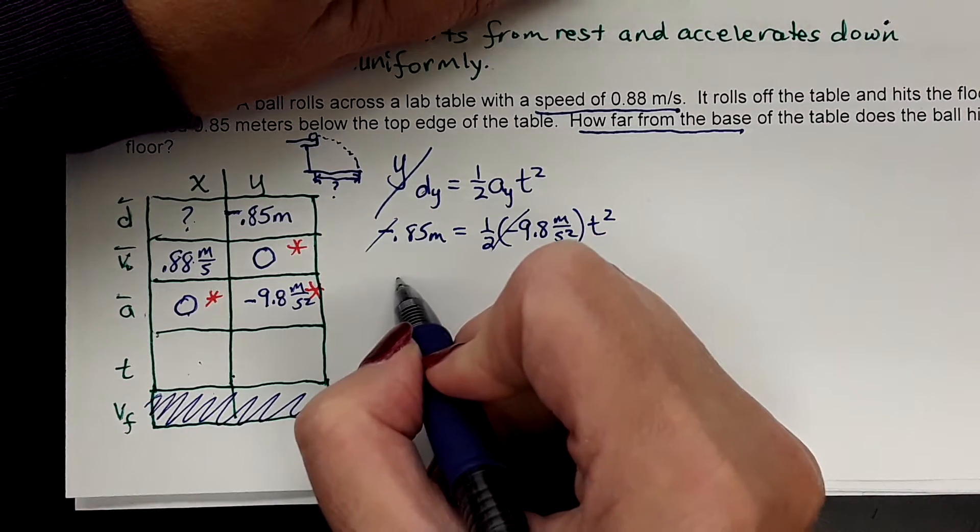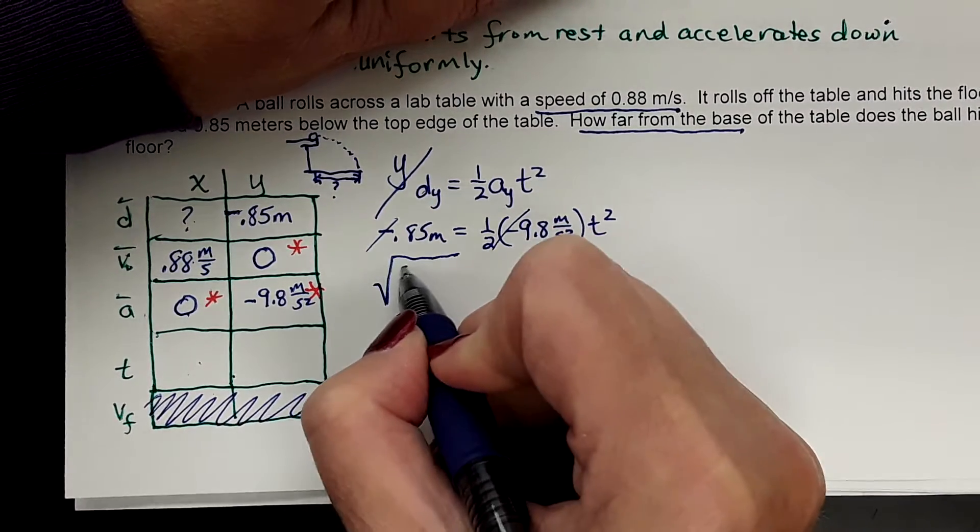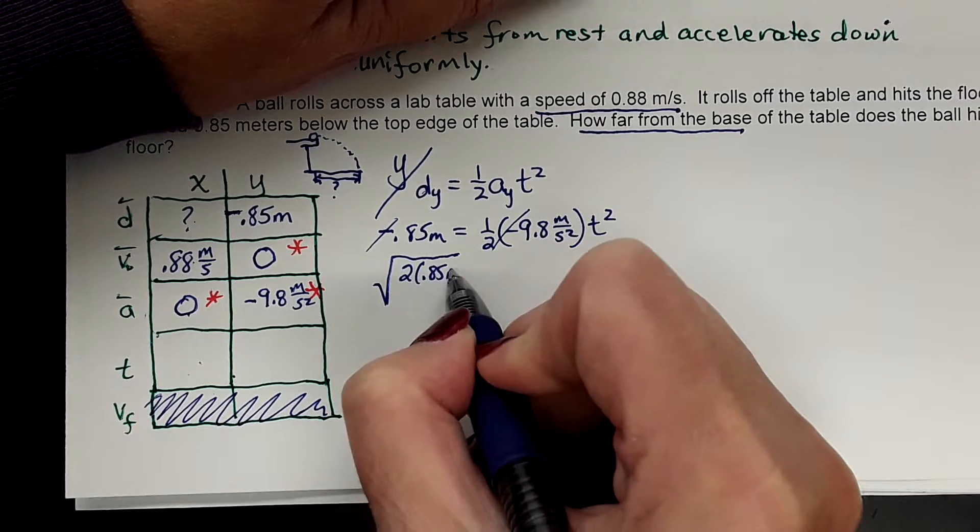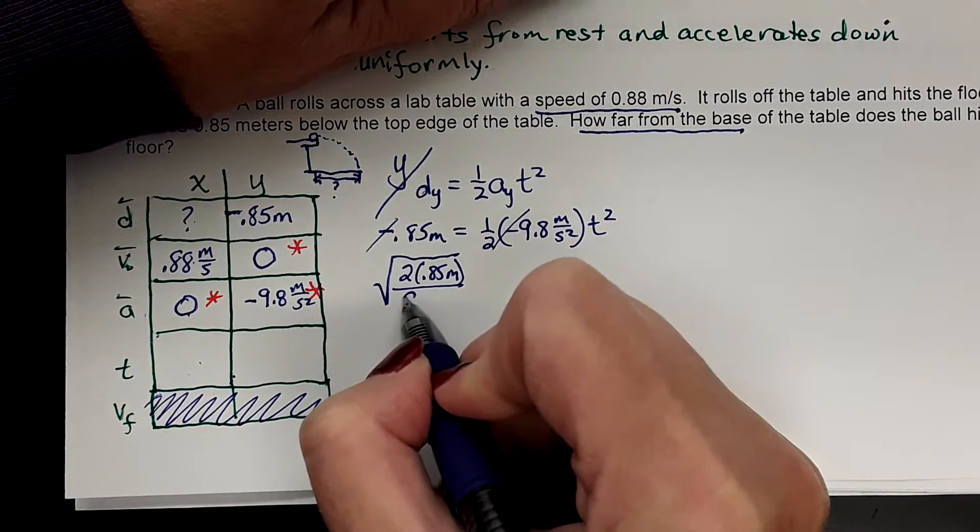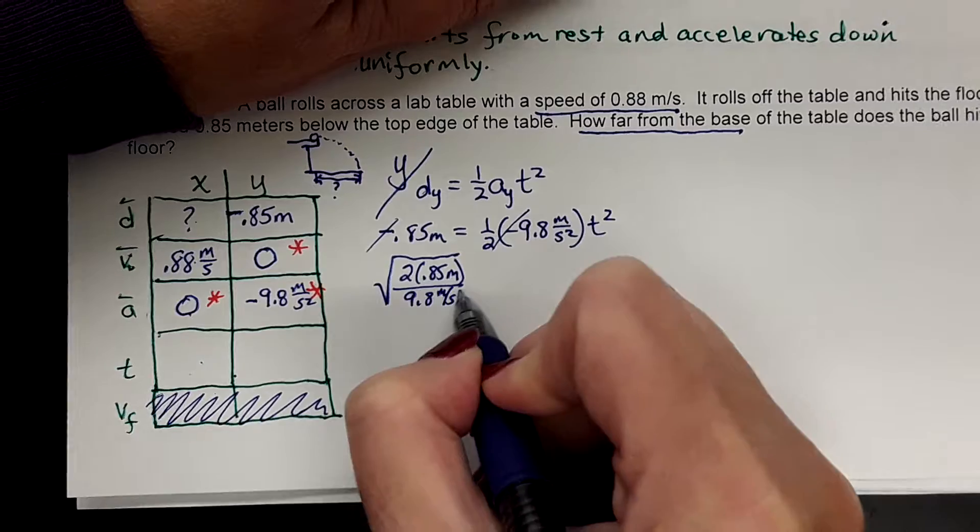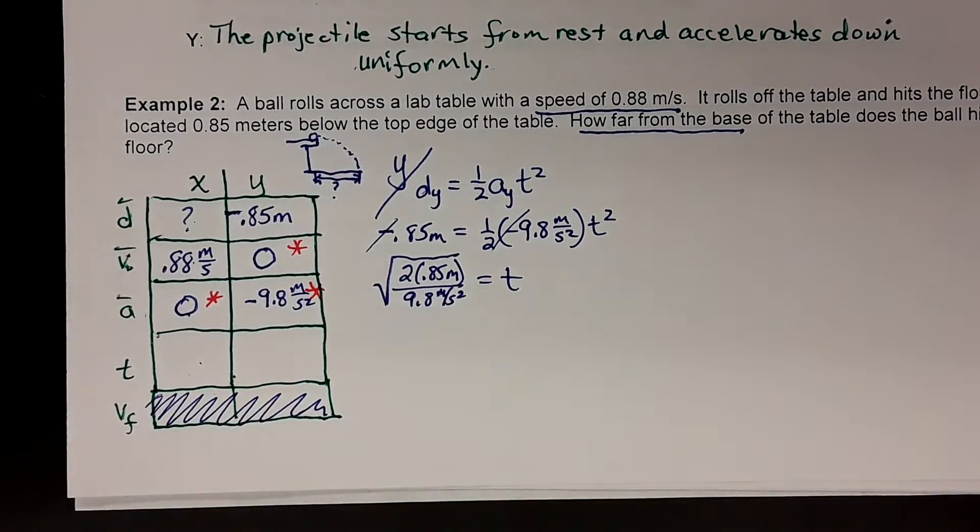So you're going to say the square root of 2 times 0.85 meters over 9.8 meters per second squared. You're going to do that.